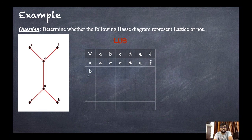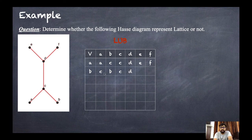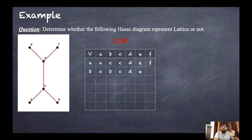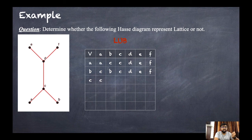For the b row: LUB of b and a is c. LUB of b and b is b. LUB of b and c is c. LUB of b and d is d. LUB of b and e is e. LUB of b and f is f. For c: LUB of c and a is c, c and b is c, c and c is c, c and d is d (wait — actually e), c and e is e, c and f is f.